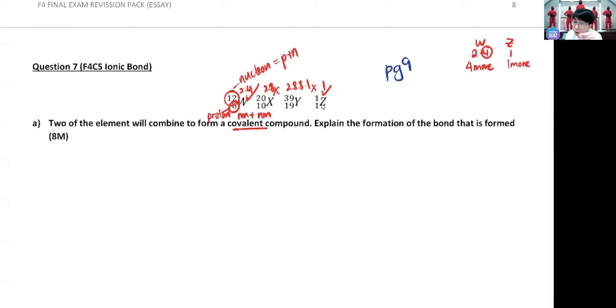So because of this four more and one more, do the cross method. W Z four - so you have to draw one W and four Z. So do I need to draw this in our essay? Depends on the marks. If it's eight marks, normally no need to draw, but if you draw it, it's not wrong. You get a point, but sometimes you see ten marks, must draw.